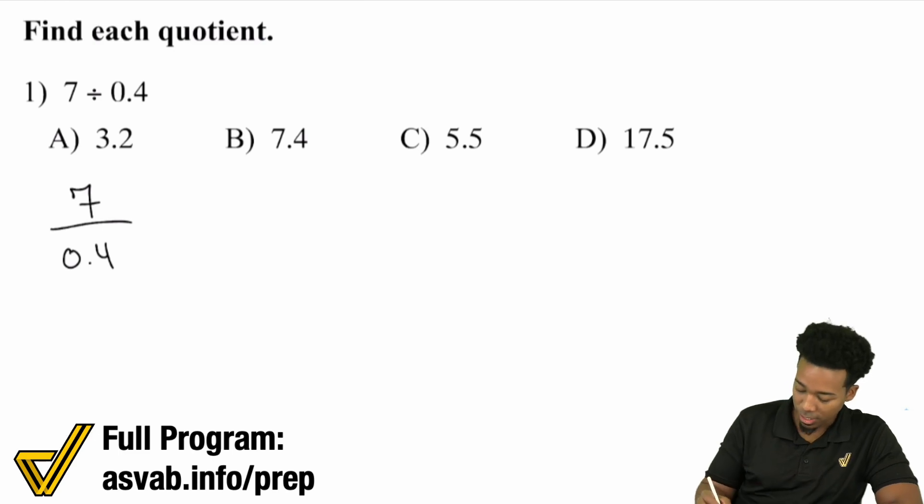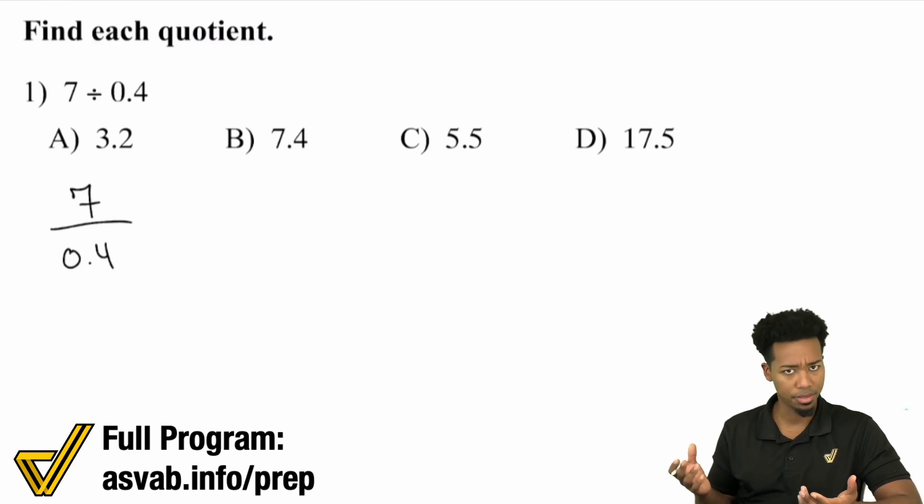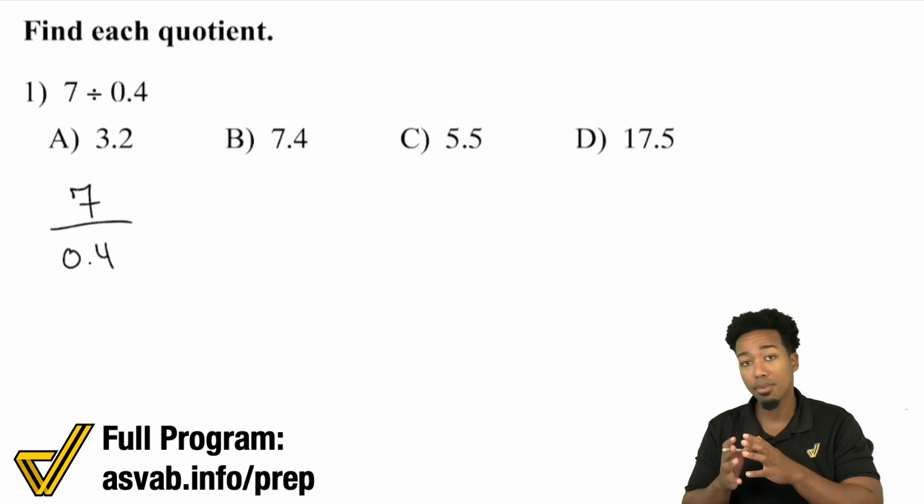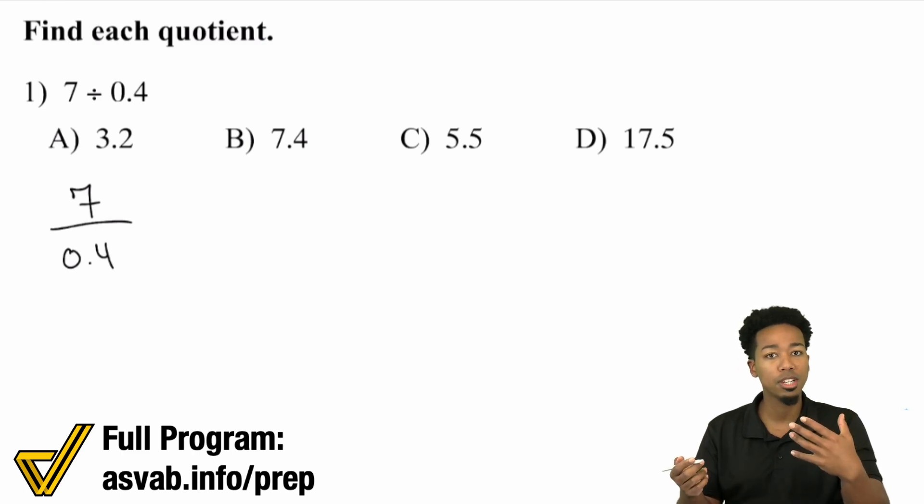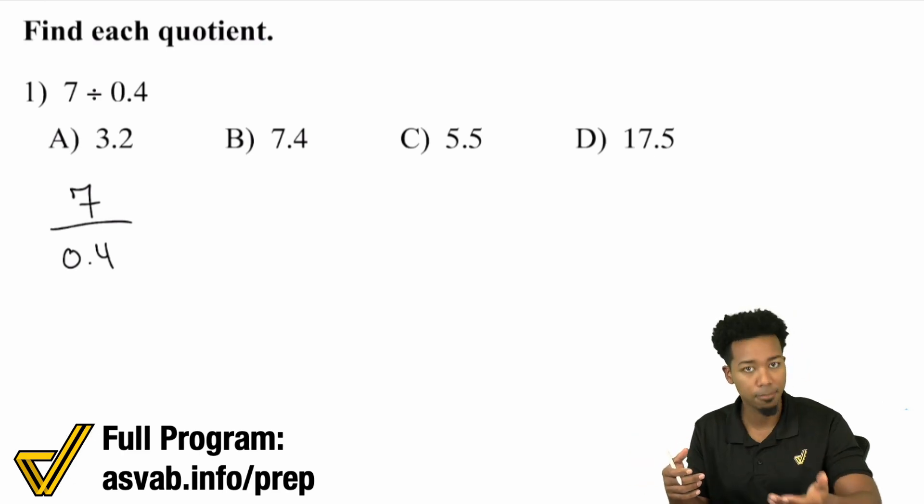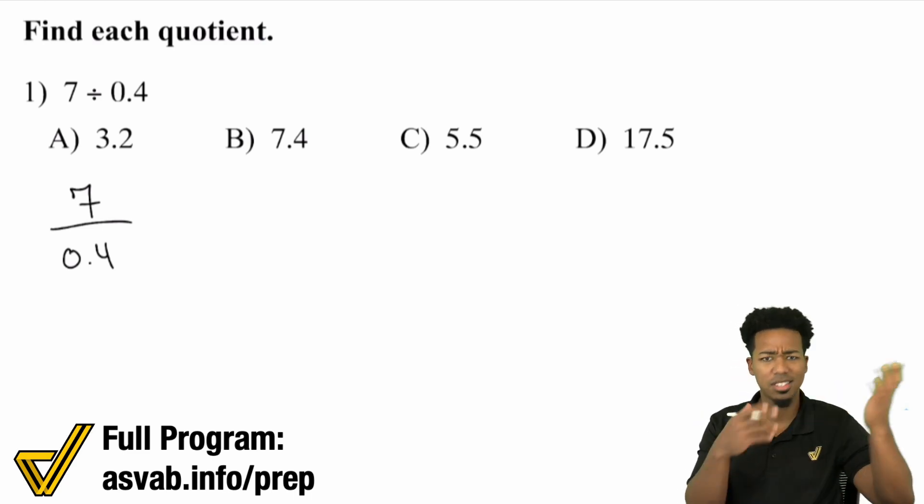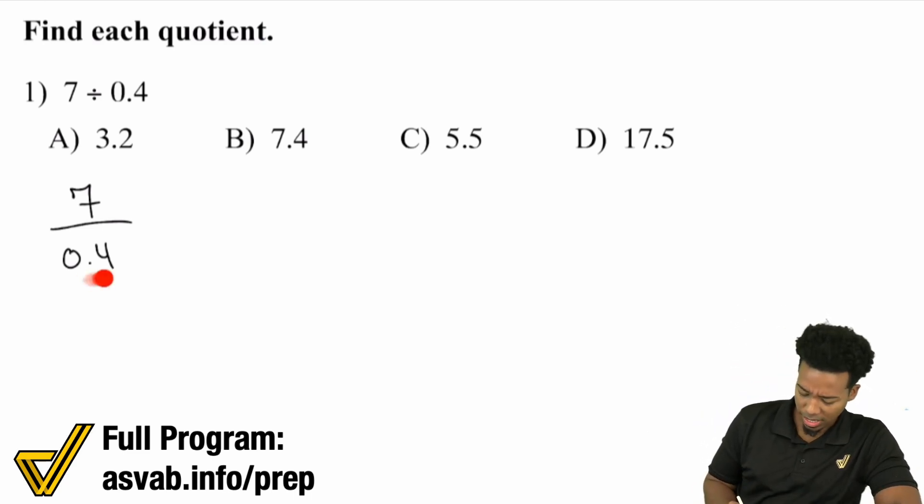Here's the thing. We have 0.4, which is 4 tenths. If you've had practice in understanding place value, you know decimals have tenths place, hundredths place, thousandths place. How do you get rid of a decimal in the tenths place? Well, multiply by 10. And remember with fractions, whatever you do to the bottom, you do to the top.